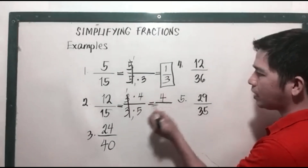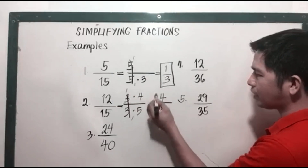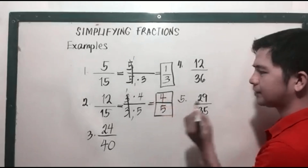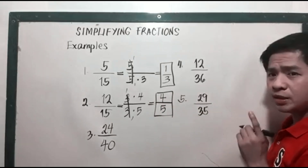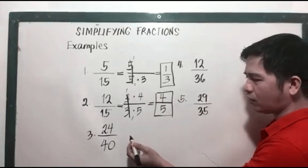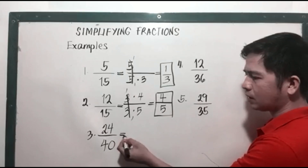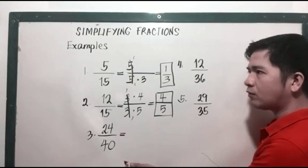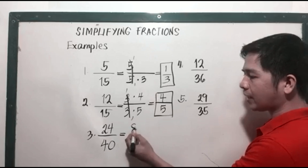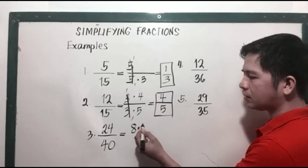Next, number 3, we have 24 over 40. 24 can be factored as 8 times 3.